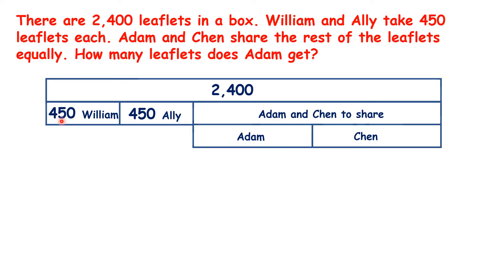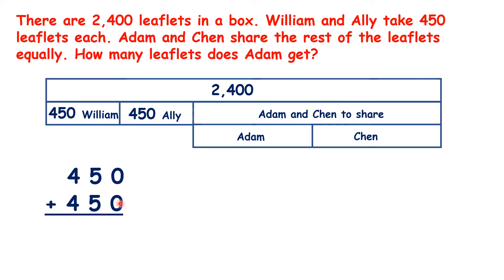So first, let's work out how many leaflets William and Ali take together. We work out 450 plus 450, so we know that they have taken 900 leaflets.